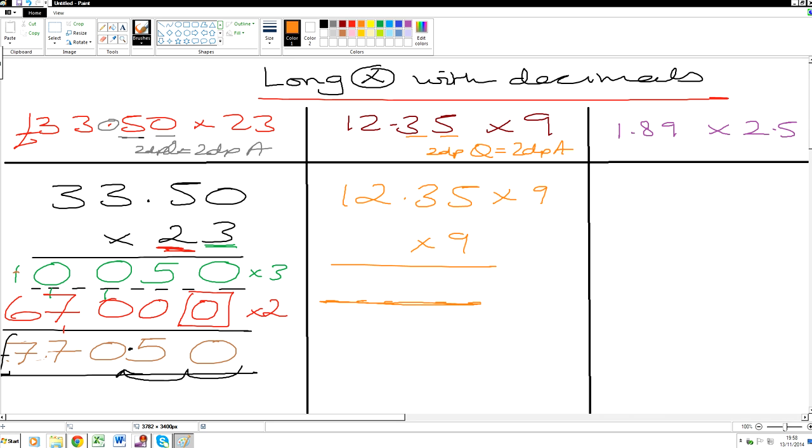So 5 times by 9 is 45. 3 times by 9 is 27. Add 4 is 31. 2 times by 9 is 18. 18 add 3 is 21. 1 times by 9 is 9. 9 add 2 is 11.